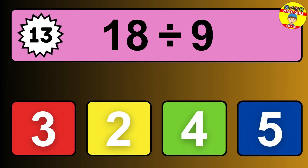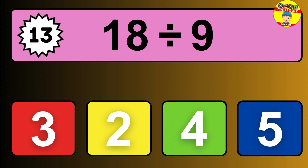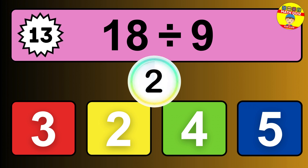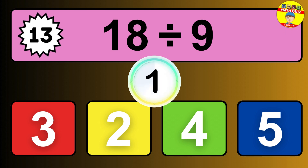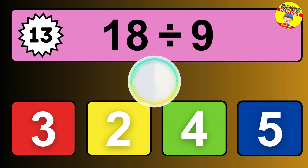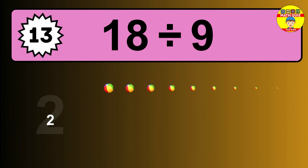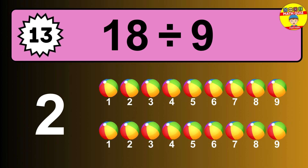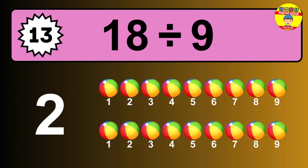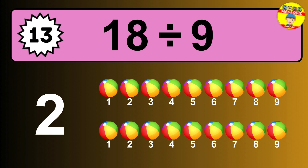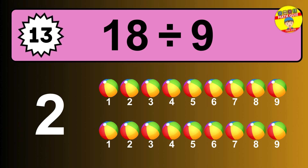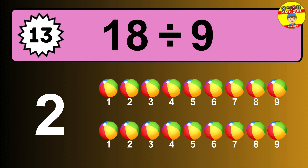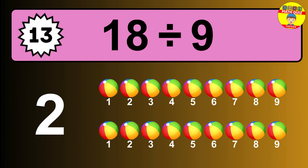18 divided by 9 is... time to think. Let's go to the solution. Divide the number 18 by 9. Each group contains 9 units. So dividing 18 by 9 results in 2 equal groups. Thus, the result is... 18 divided by 9 equals 2.